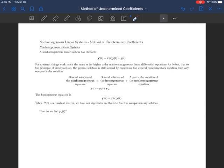So the homogeneous equation, right, again is this one here, y prime equals P(t) y(t). And when that's a constant matrix, we can just use our eigenvalue methods to find the complementary solution. And we'll see an example of that in just a second. The question then becomes, how do we find the particular solution? And that can be a little bit of a challenge. So let's get started.